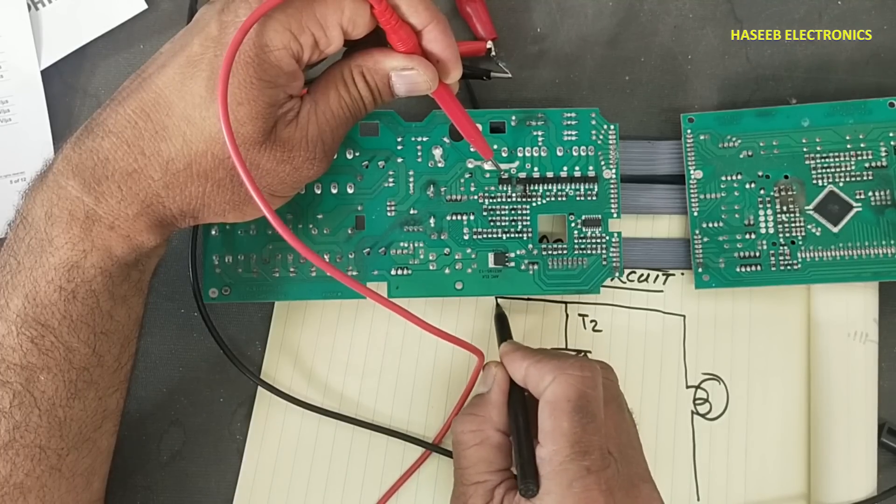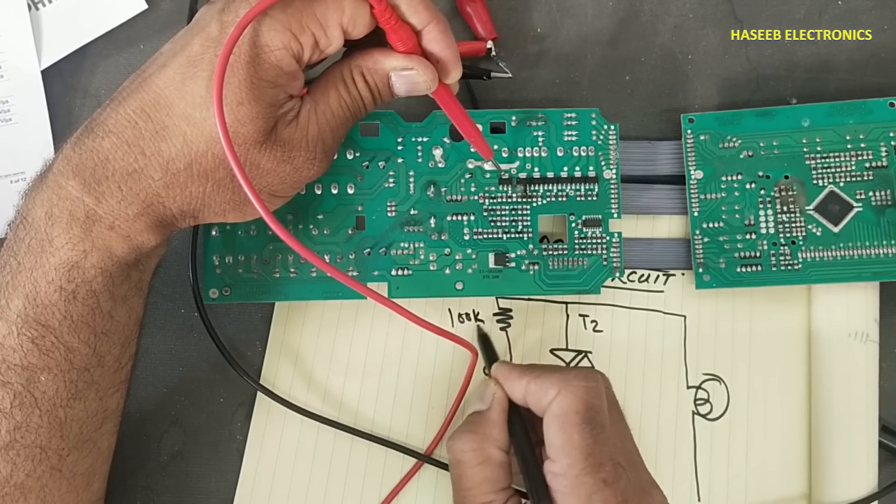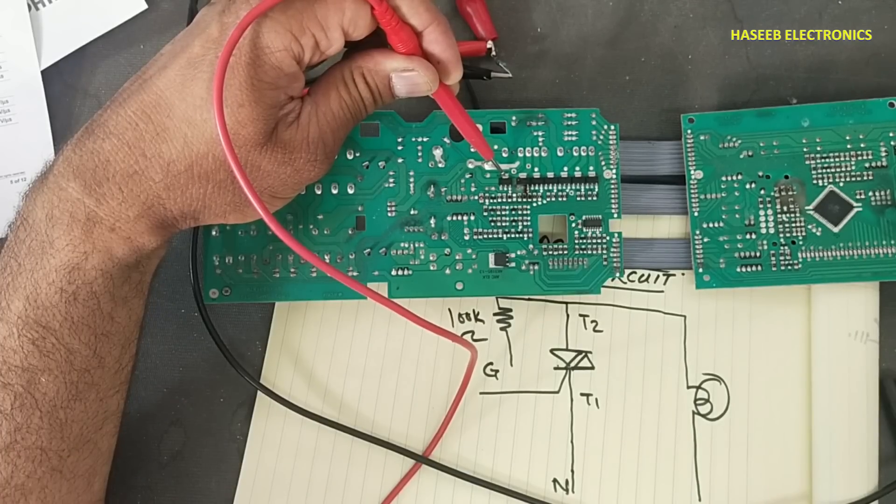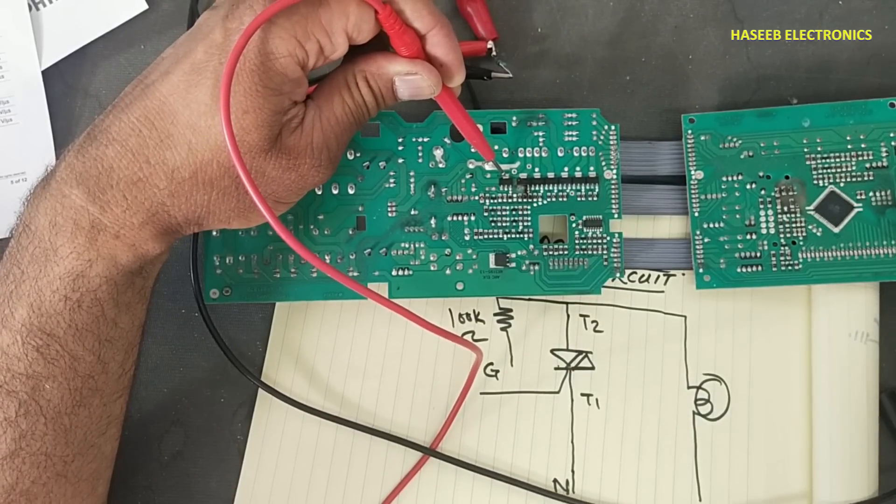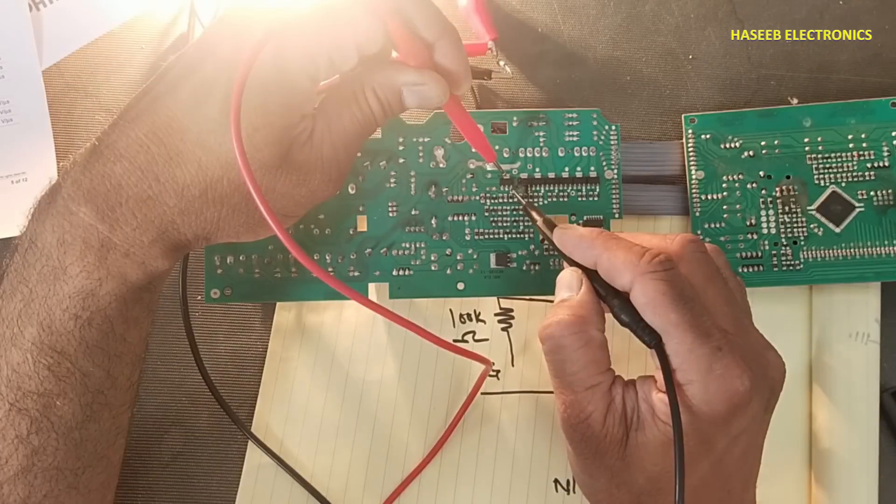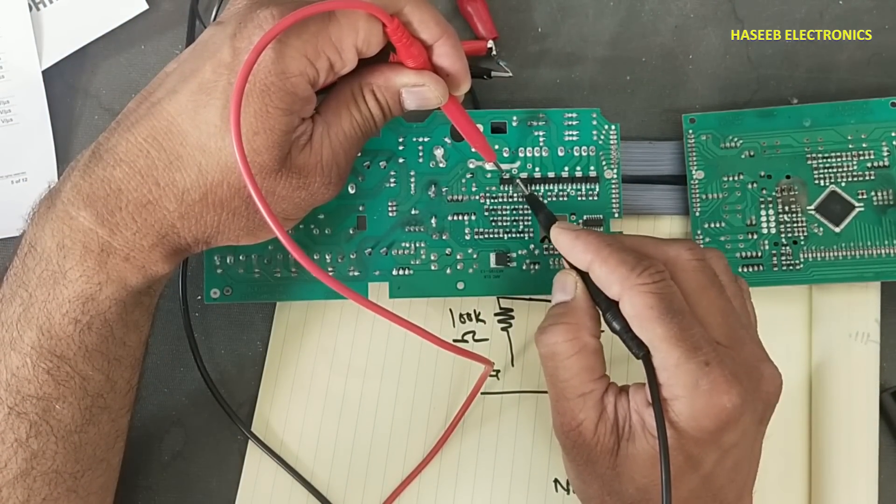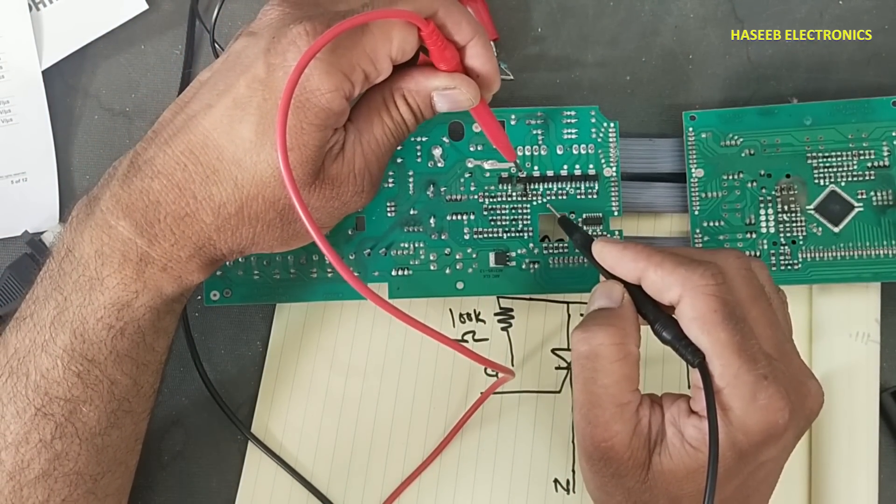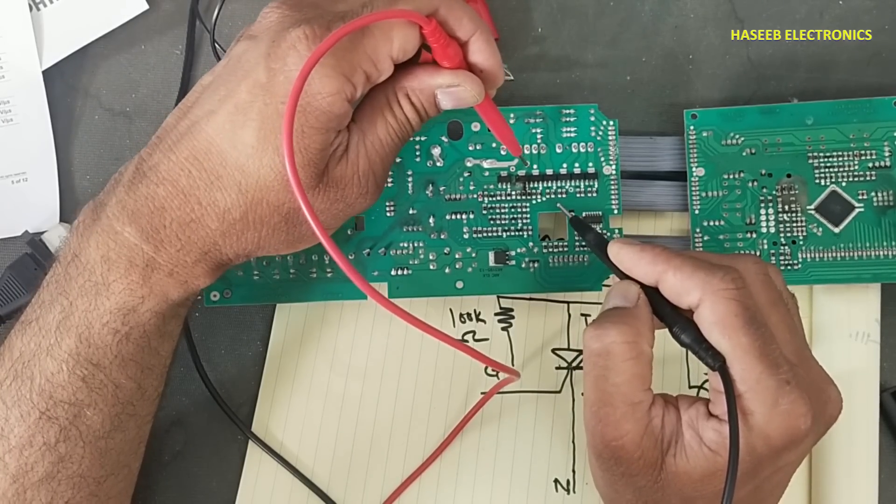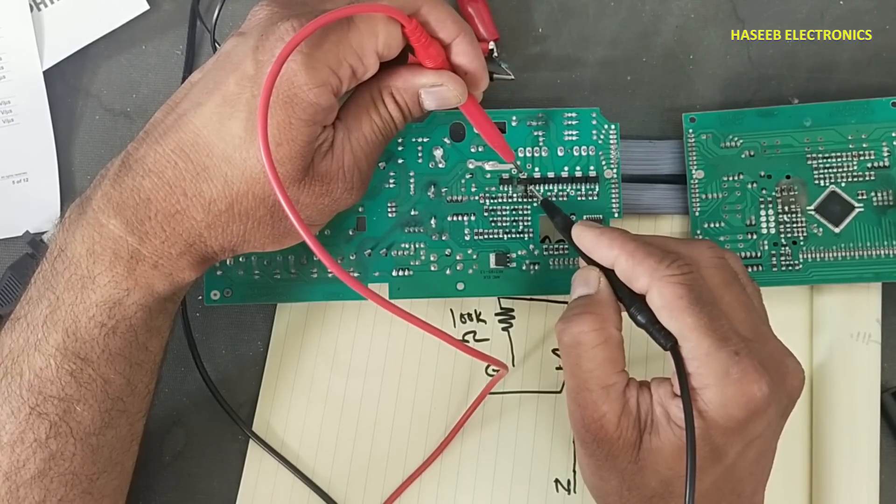Now we need our trigger signal. We're connecting the 100 kilohm resistance here. Now we'll touch this signal to the gate. The lamp turned on - that means this triac is good.